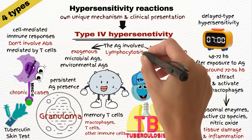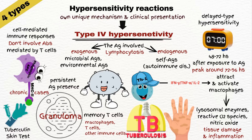Lymphocytosis is common in type 4 reactions due to the involvement of T-cells. You might also see leukocytosis, but eosinophils are usually normal.